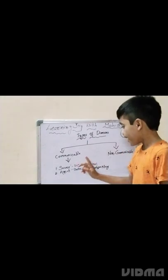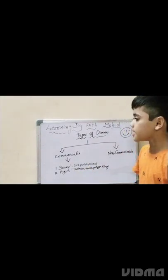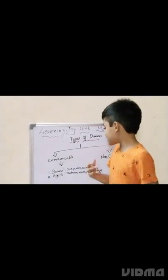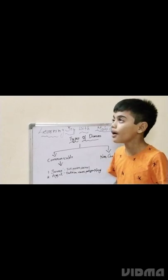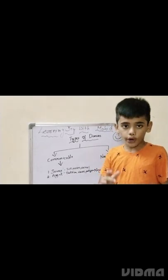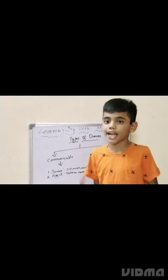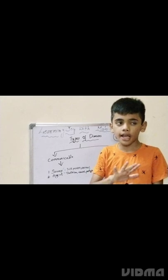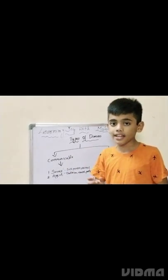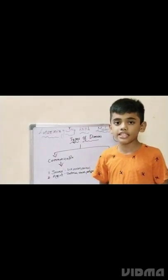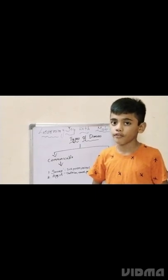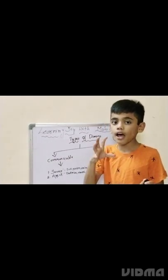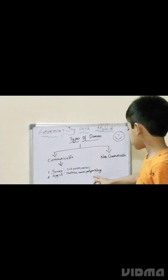Next, we come to the second point: agent. Agent refers to the thing — like bacteria or a virus — that causes the disease inside the body. For example, the Corona virus came to our entire world. When Corona virus entered our body, the virus is called the agent. The agent can be bacteria, virus, or protozoa.